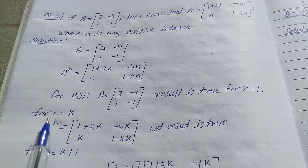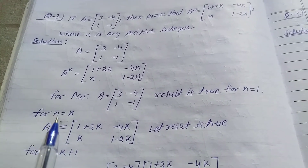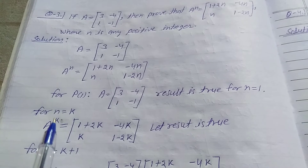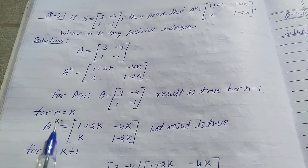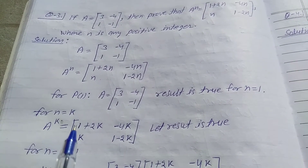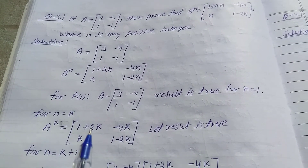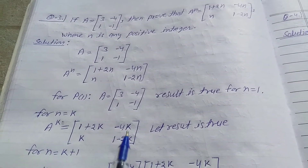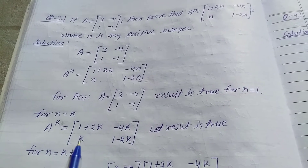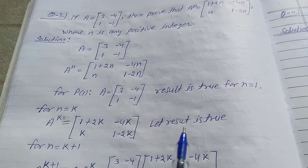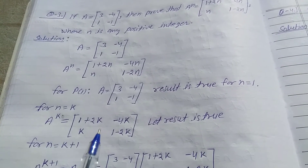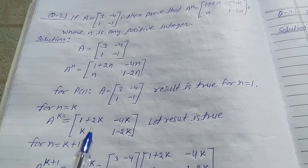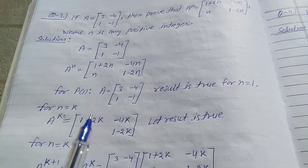Let us assume the result is true for N equal to K. So A power K is equal to matrix [[1+2K, -4K], [K, 1-2K]]. Suppose that this result is true.